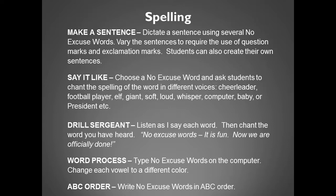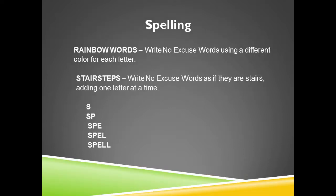Word Process — type no-excuse words on the computer; change each vowel to a different color. ABC Order — write no-excuse words in ABC order. Rainbow Words — write no-excuse words using a different color for each letter. Stair Steps — write no-excuse words as if they are stairs, adding one letter at a time.